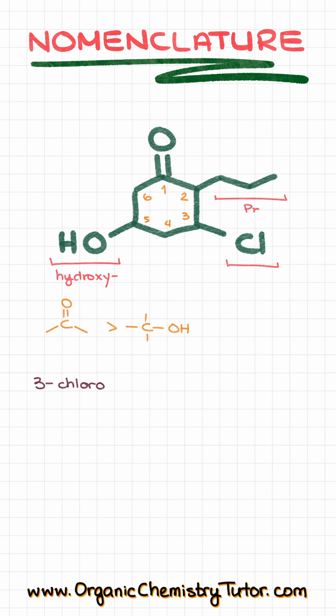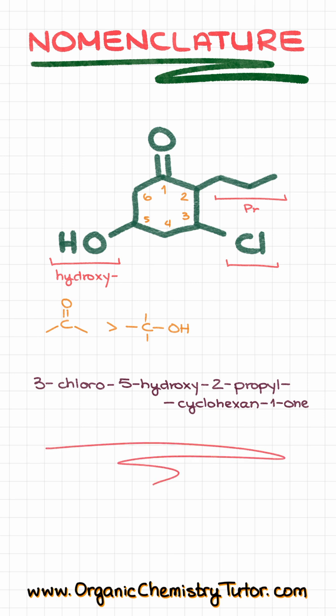By alphabetizing our substituents, we get 3-chloro, 5-hydroxy, 2-propyl, cyclohexane as our parent, and on the first carbon we have a ketone, so we add the ending -one. So the full name is 3-chloro-5-hydroxy-2-propylcyclohexan-1-one. Easy peasy.